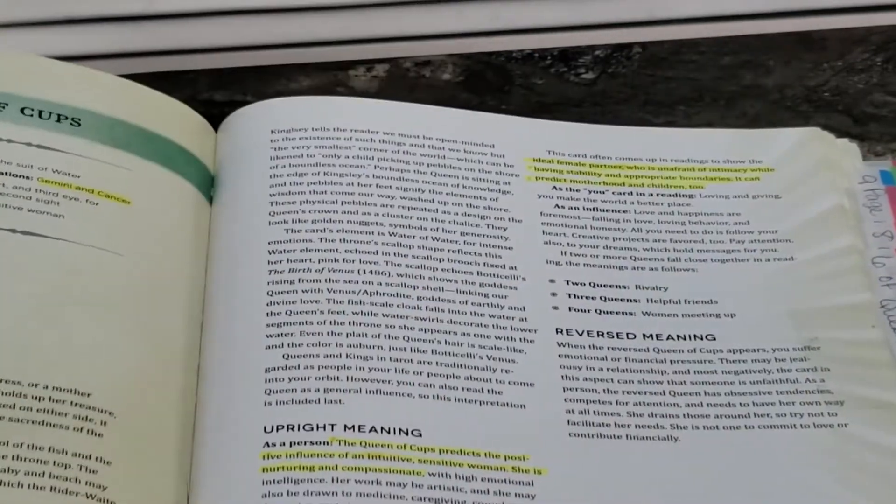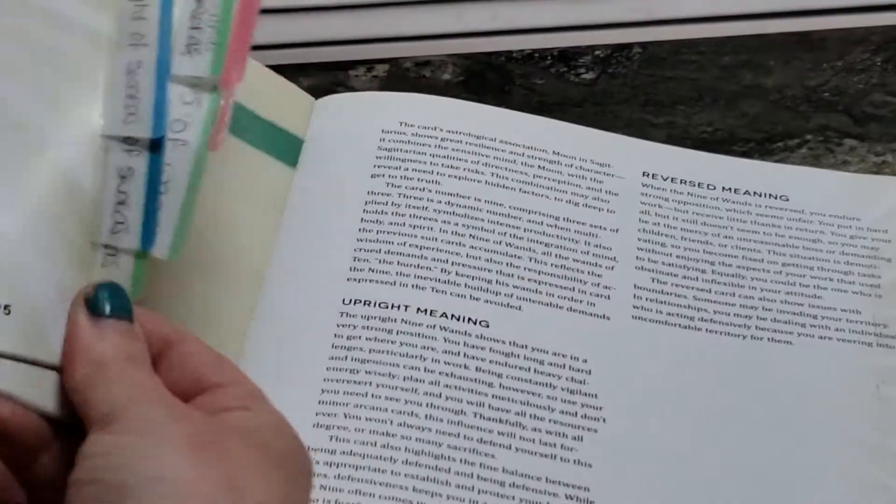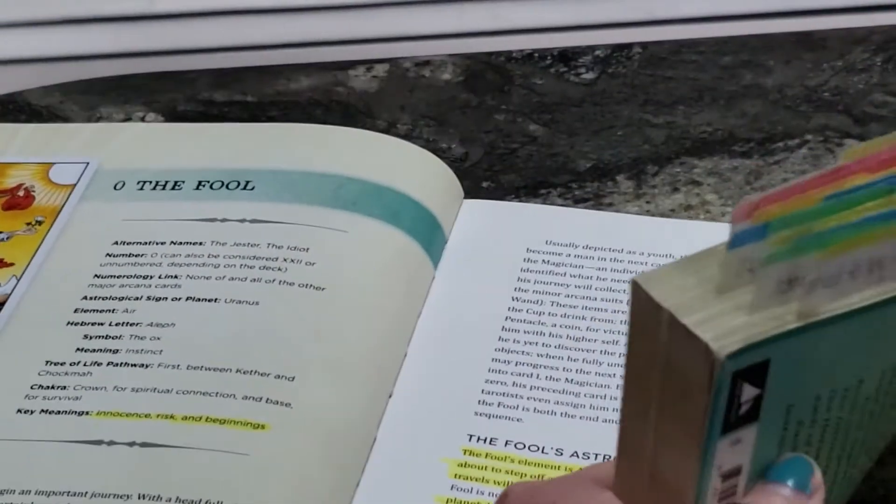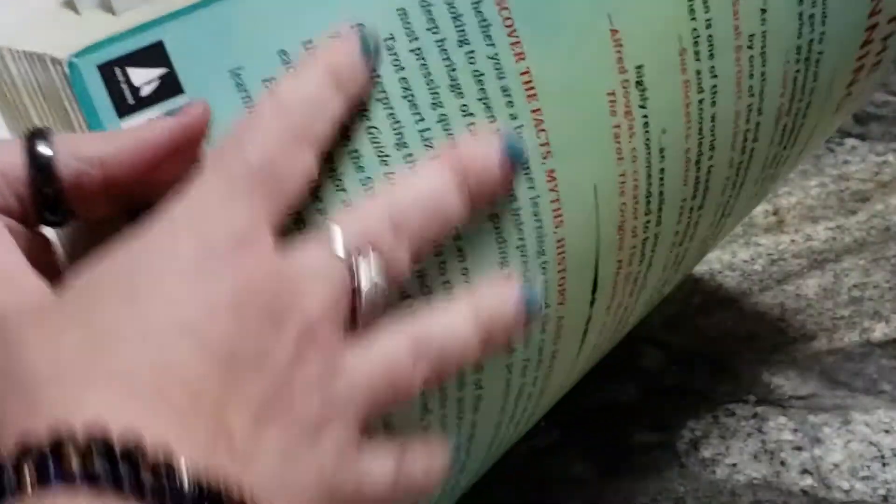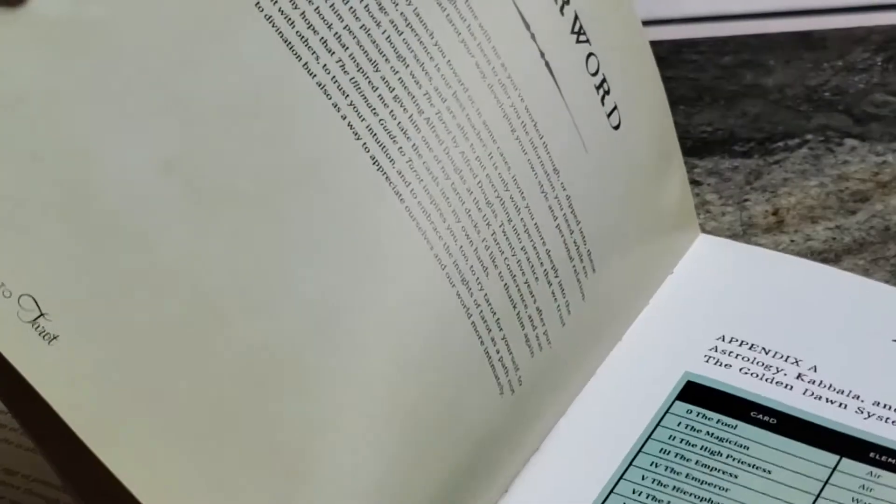And that's as a person. So this is the difference between court cards and Minor Arcana. As an influence and as a person. And then as the you card or as an influence. And then reverse meaning. And that's it. So they're all like that. And it's the same setup for everyone. This book is big. And it's all this whole thing. Let's see if I can show you. All of that is all the cards. And then it ends at the back with the King of Wands. And it has a little bit of a glossary. But not much.